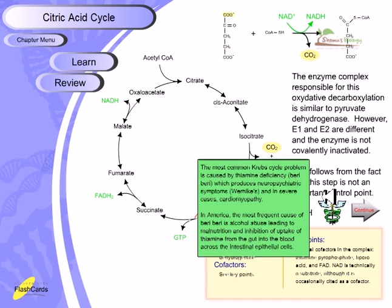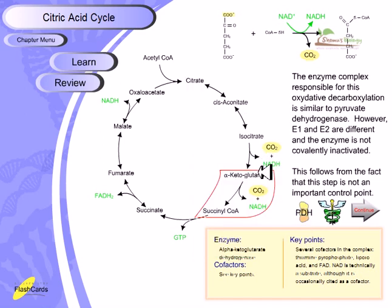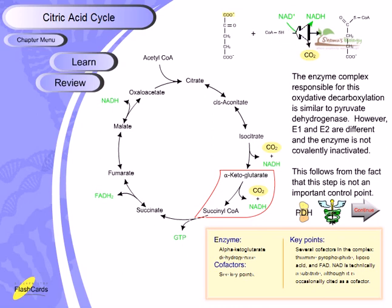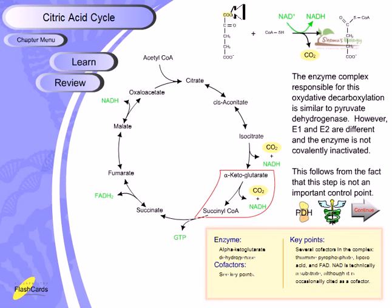The fourth step is the production of succinyl-CoA from alpha-ketoglutarate. This is the second step that generates carbon dioxide and is also a dehydrogenase reaction. The enzyme responsible is alpha-ketoglutarate dehydrogenase. Coenzyme A acts as a cofactor, facilitating the reaction and attaching the acyl-CoA group to alpha-ketoglutarate, converting it into succinyl-CoA.